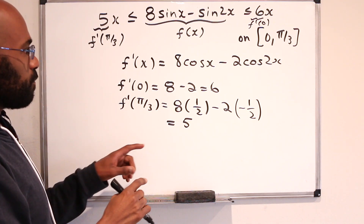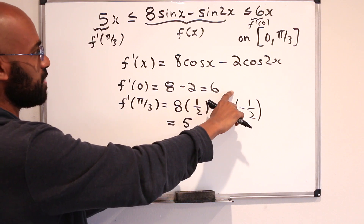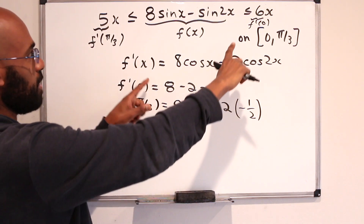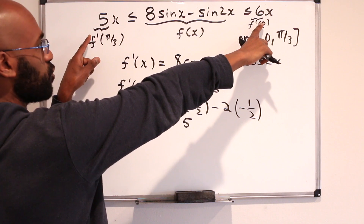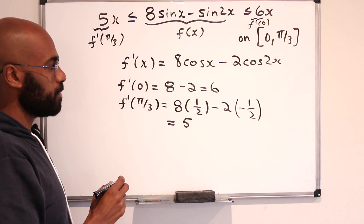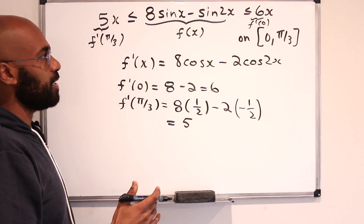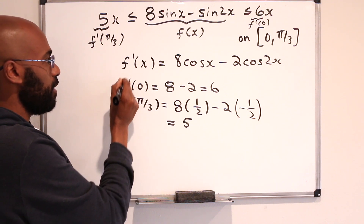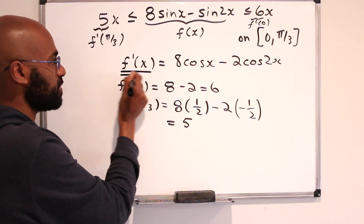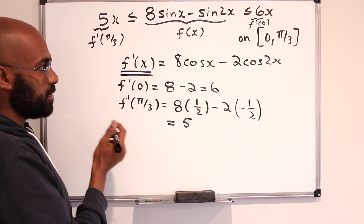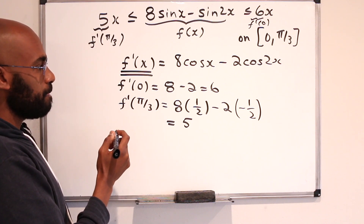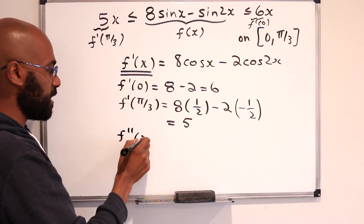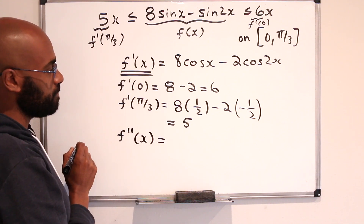It almost seems like we're taking these values 5 and 6 and integrating them to get the bounding functions. We could do something like that if we had information about the monotonic nature of the derivative itself — whether it decreases or increases — which we can find by looking at the second derivative of our original function.